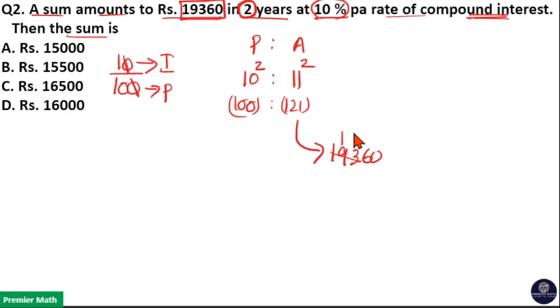So 121 goes 6 times in 726, remaining is 0. That is, here 121 goes 160 time in 19,360. That means 1 unit is 160.